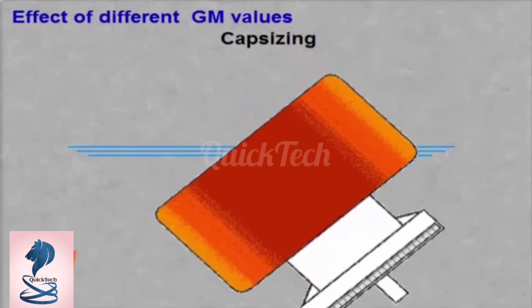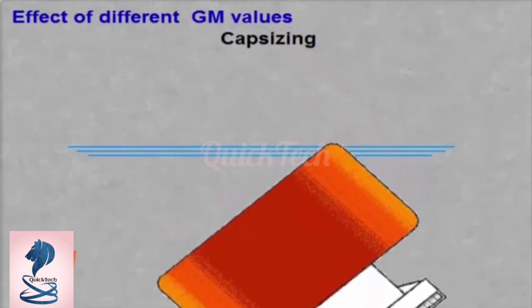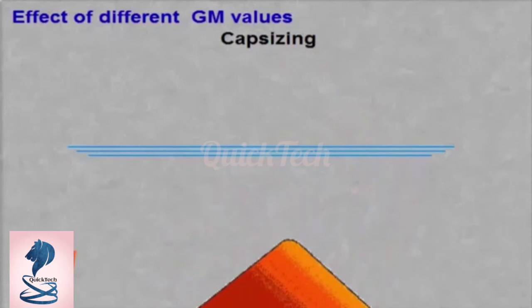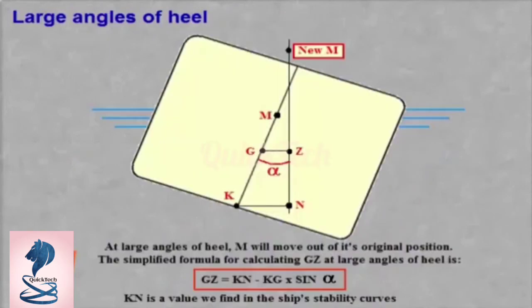At large angles of heel, the metacentre will move out of its original position and we will have to use a more complex formula to calculate the righting lever GZ. This is simplified by the following formula.